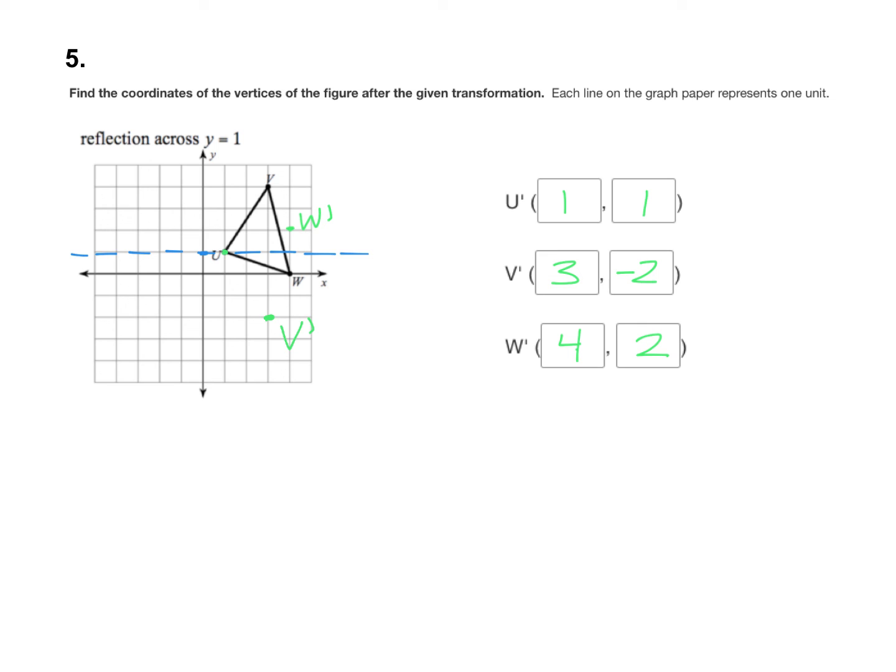And again, U prime, because it's on the reflection line, it just stays in the same spot. Now you can see when I connect these and form my triangle, it looks like it's the same shape and same size. It's just been flipped across the reflection line.